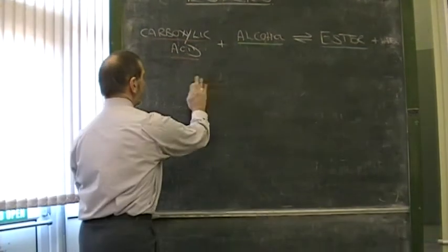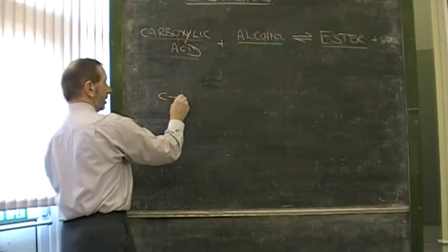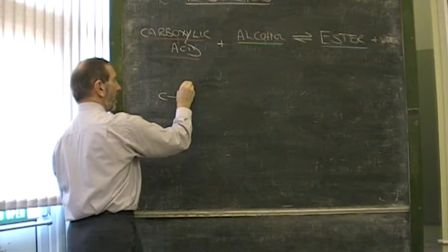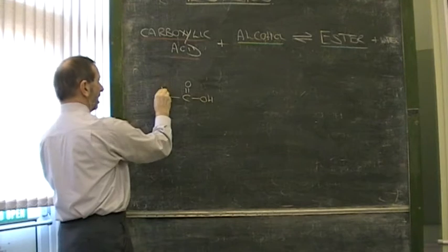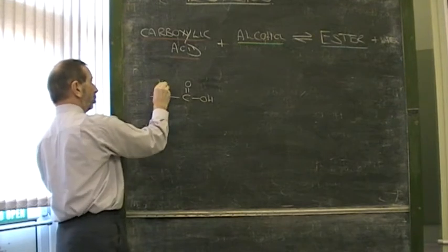Let's take an example. Let's take a nice simple carboxylic acid. Here's one that you know really well, ethanoic acid, C-O-O-H. Ethanoic acid with its two carbon atoms.